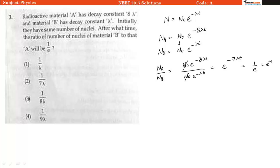Or we can say e raise to power minus 1. So comparing these two we get that 7 lambda t should equal 1, or we can say that time should equal 1 divided by 7 lambda.